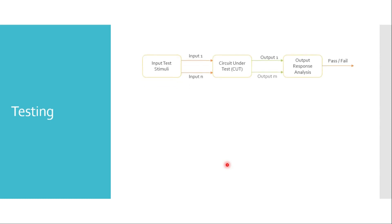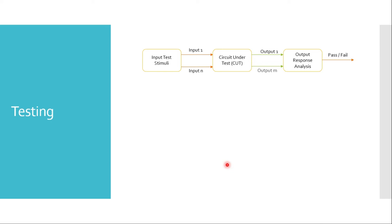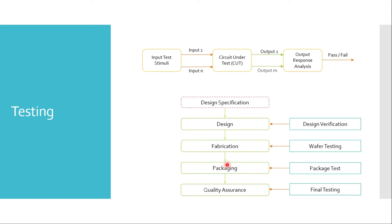Now let's understand what testing is and how it is done. Testing typically consists of applying a set of stimuli to the inputs of the circuit under test, or CUT, while analyzing the output responses. Circuits that produce the correct response for all input stimuli pass the test and are considered to be fault-free. Those circuits that fail to produce the correct response at any point during the test sequence are assumed to be faulty.